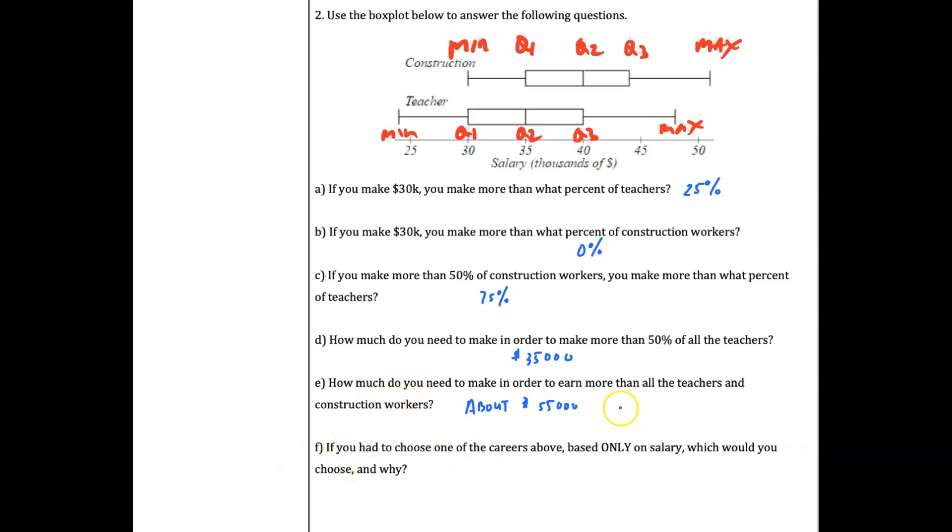Question F is an opinion question. Let's just look at this lesson - how much do you need to make in order to make more than all the teachers and construction workers? That's the max value here. So that's it.